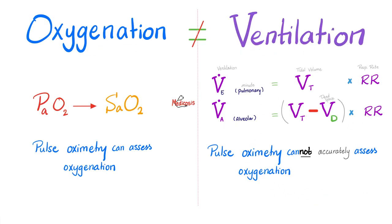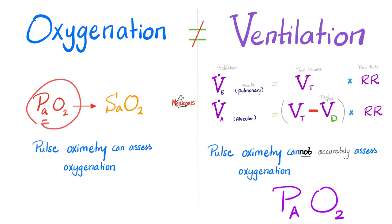Is there a difference between oxygenation and ventilation? Absolutely. Ventilation happens first, then oxygenation. Ventilation is getting air into the alveoli — oxygen in the alveoli is PAO2. Then diffusion moves oxygen from the alveoli to the blood — freely floating in the blood as PaO2 — then it jumps on the hemoglobin as SaO2, and the hemoglobin delivers oxygen to the tissue — that's oxygenation. Pulse oximetry can help you assess oxygenation but not ventilation.